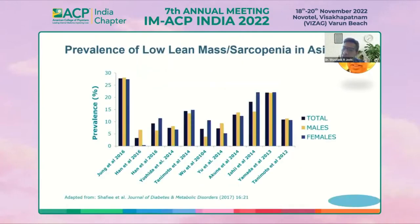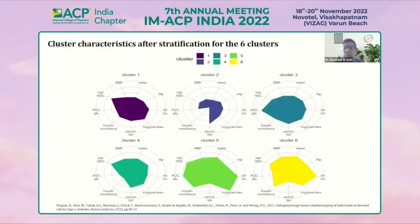Sarcos means muscle, and sarcopenia means less muscle. Across the whole Asian geography — from East Asia including Japan, Korea, Taiwan, Singapore, Malaysia, to India, Pakistan, Nepal, Sri Lanka, and Bangladesh — we can clearly recognize less muscle mass and low lean mass in our population.